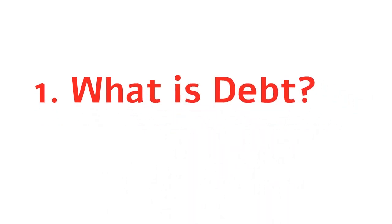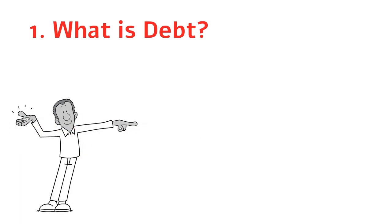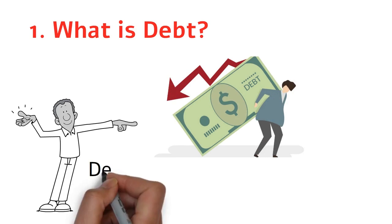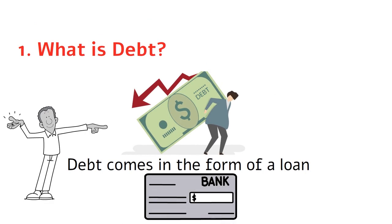Debt is an amount of money that is owed by one party, mainly the borrower, to another party, the creditor. Usually, debt comes in the form of a loan, but it can also be in the form of bonds, mortgages, or other financial instruments.